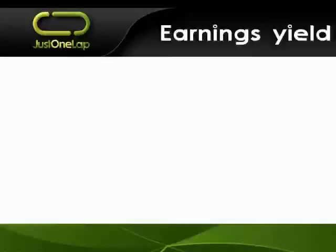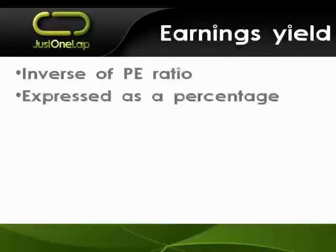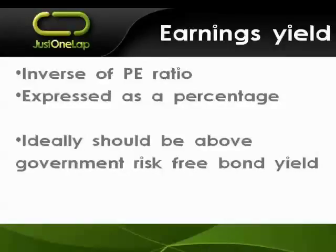We also get something called an earnings yield, which I'll touch on briefly because it's linked. It isn't used much these days. In essence, it's the inverse of a PE ratio: if PE is price divided by earnings, earnings yield is earnings divided by price, multiplied by 100 since it's expressed as a percentage. It's an older indicator used in the 70s and 80s — the logic was you want your earnings yield above your risk-free yield, which is government bonds. These days it's all about price earnings; you'll very seldom hear someone referring to earnings yield.